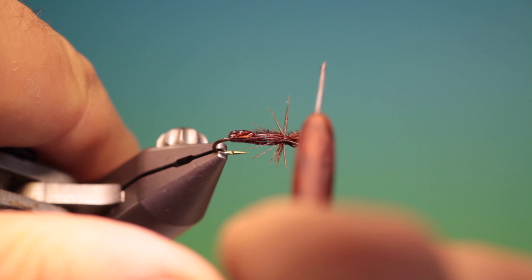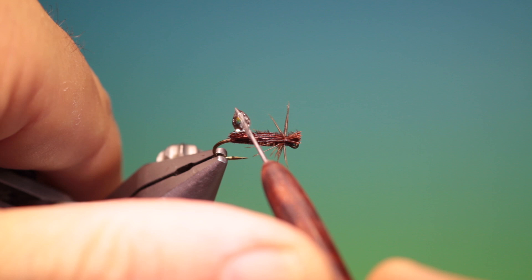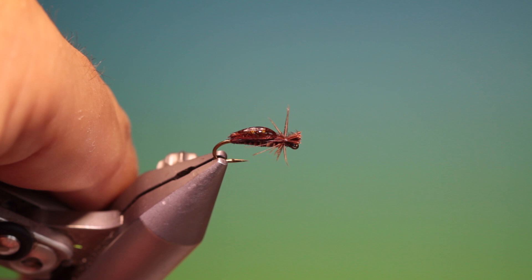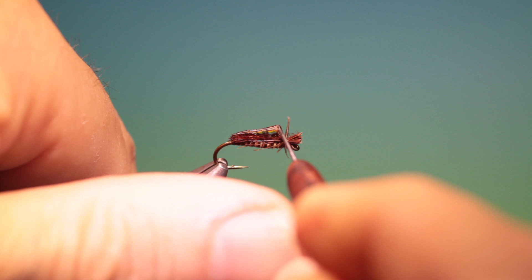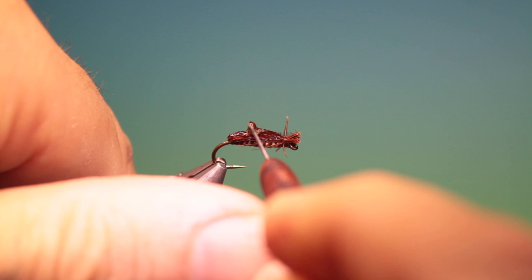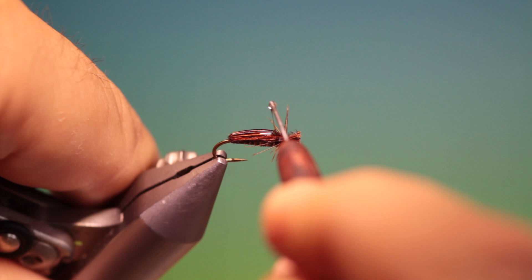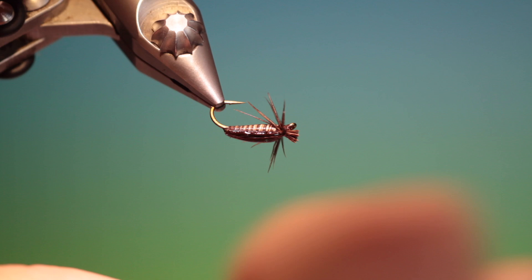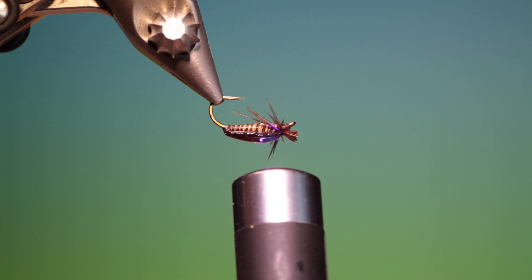And then we'll just give the shell back a coat with UV resin. I like to make sure that it penetrates the pheasant tail fibres. Put it back right on the ends. That's looking good, and then turn it upside down and give it a blast.